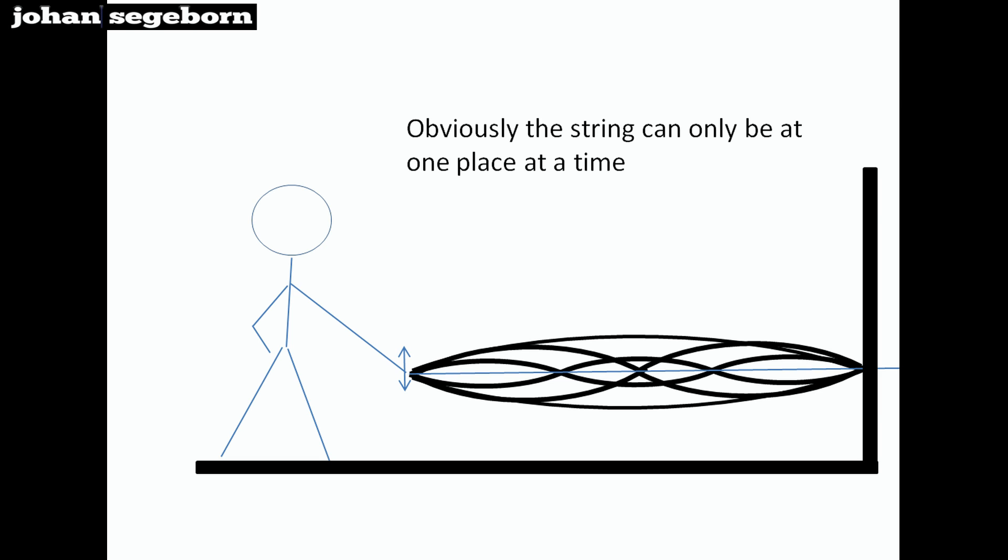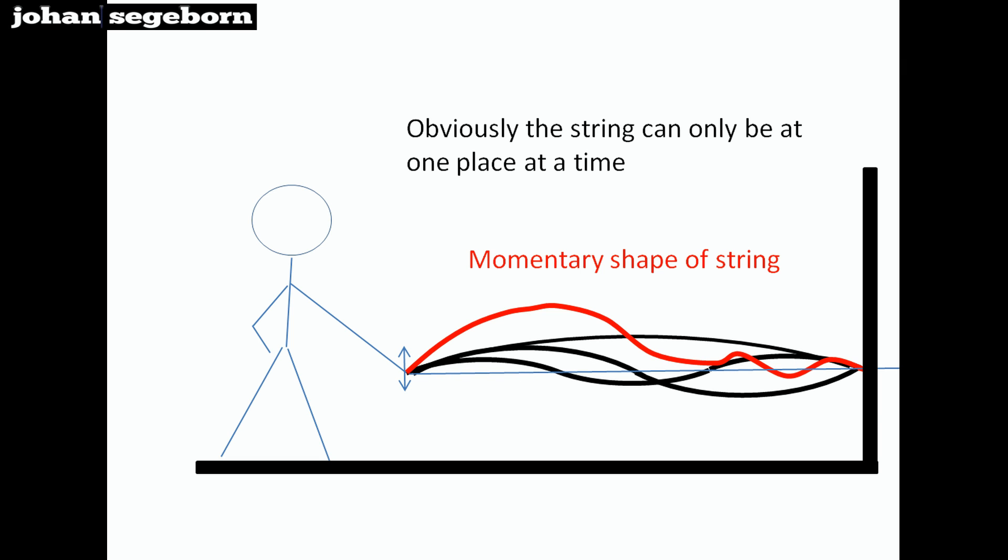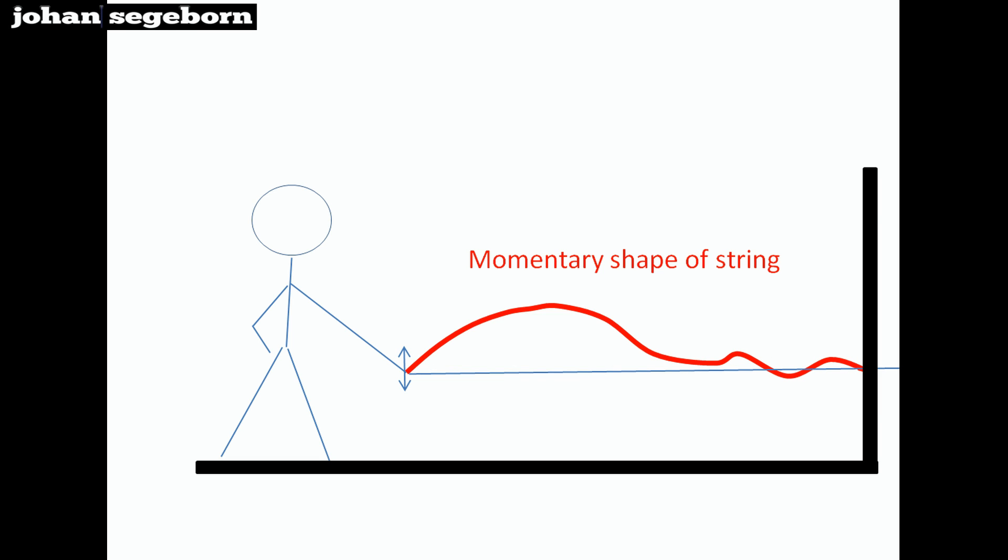Obviously the string can't be at several places at the same time. The actual shape of the string is the sum of all overtones superimposed, like you can see here in the picture.